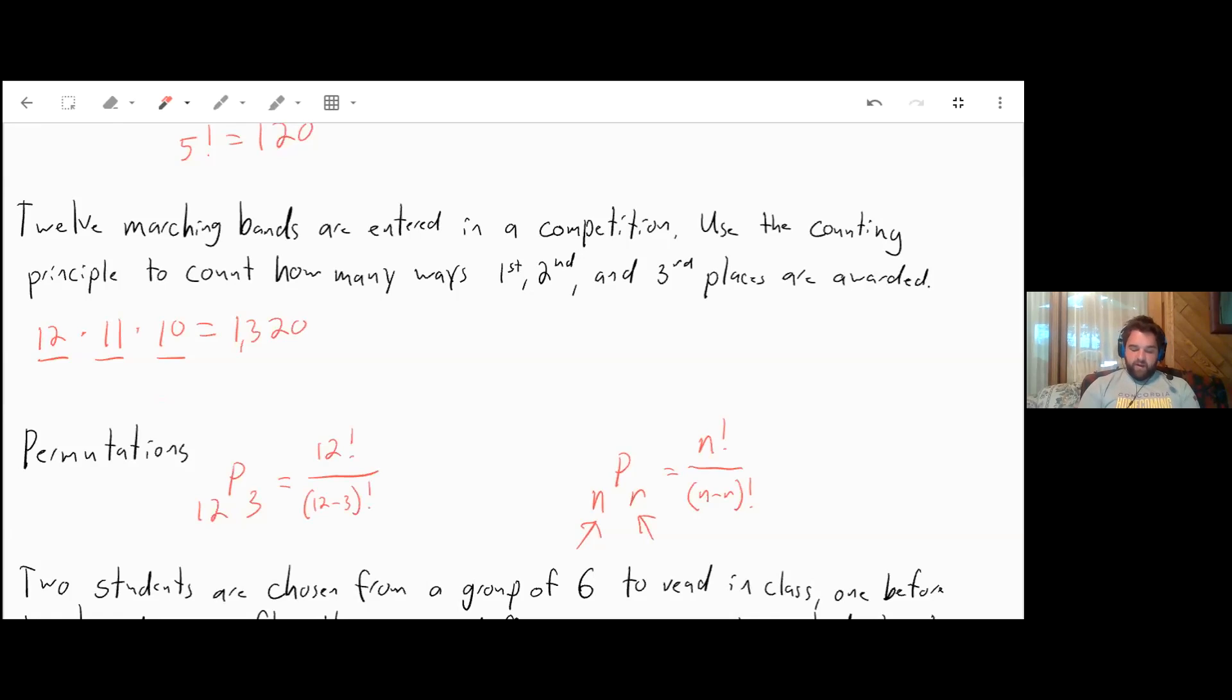So that means it'd be 9 times 8 times 7 times 6 and so on down to 1. 12 factorial will be 12 times 11 times 10 times 9 times 8 and so on. Well, when we are multiplying by the same thing on top that we're dividing by on the bottom, those can cancel out. We can cancel out the 9, the 8, the 7, 6, and everything else, leaving us at the top with just 12 times 11 times 10, which is exactly what we've already done. And that comes out to be 1320.